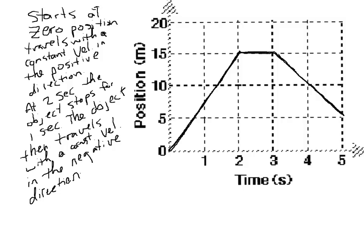That might be the conclusion of our statement, telling us everything we need to know about the object. Starting at the zero position, it travels with a constant velocity in the positive direction. The object then stops for a period of one second, and then travels with a constant velocity in the negative direction. So those are the three phases of motion we see.